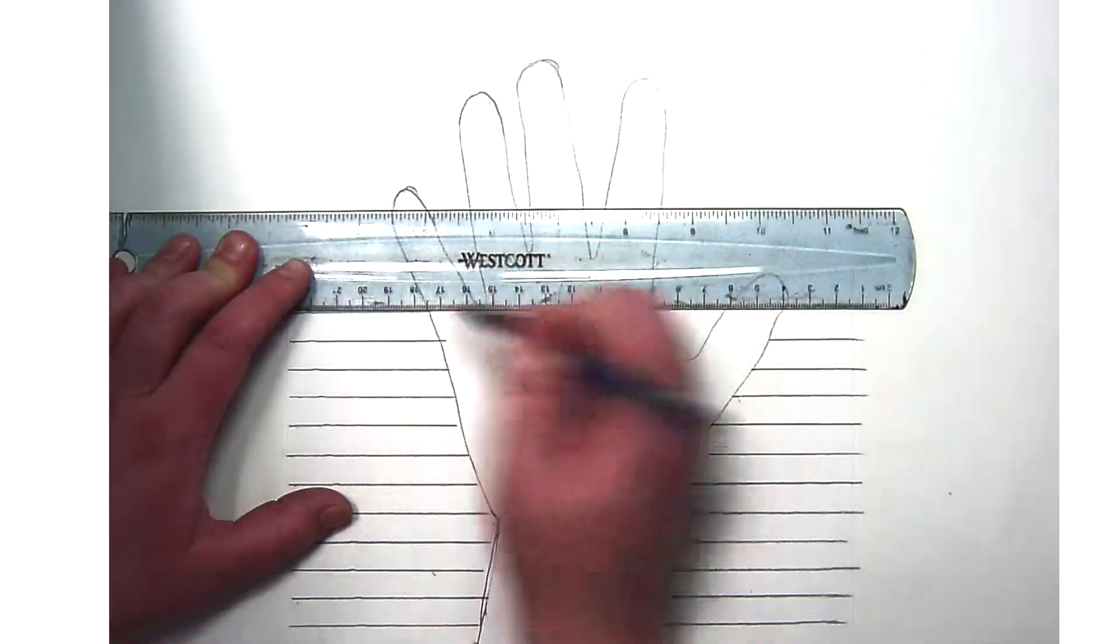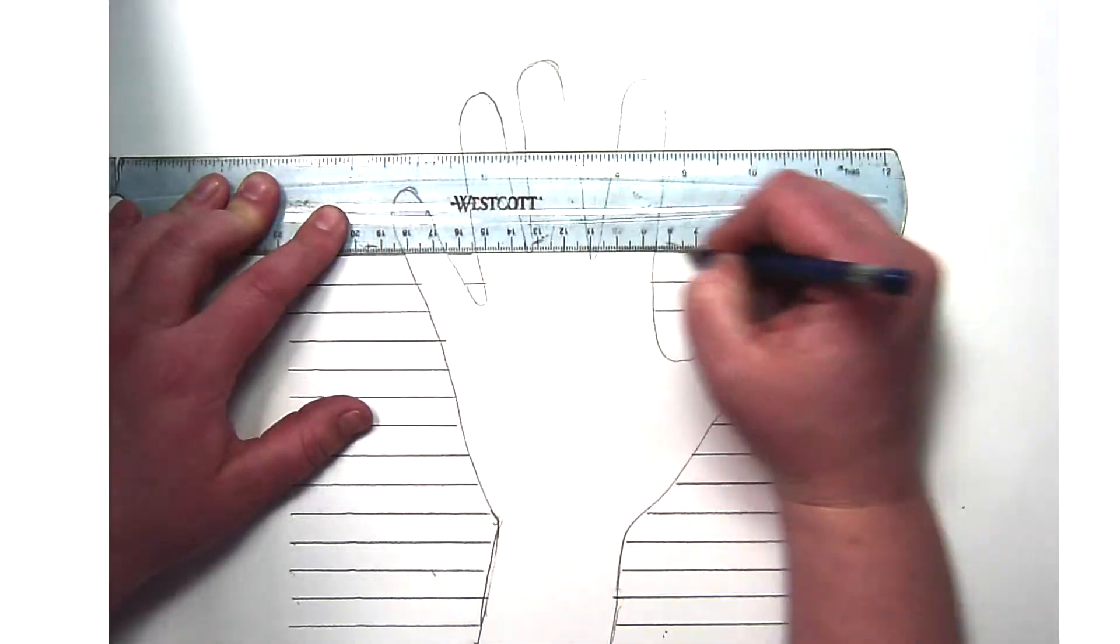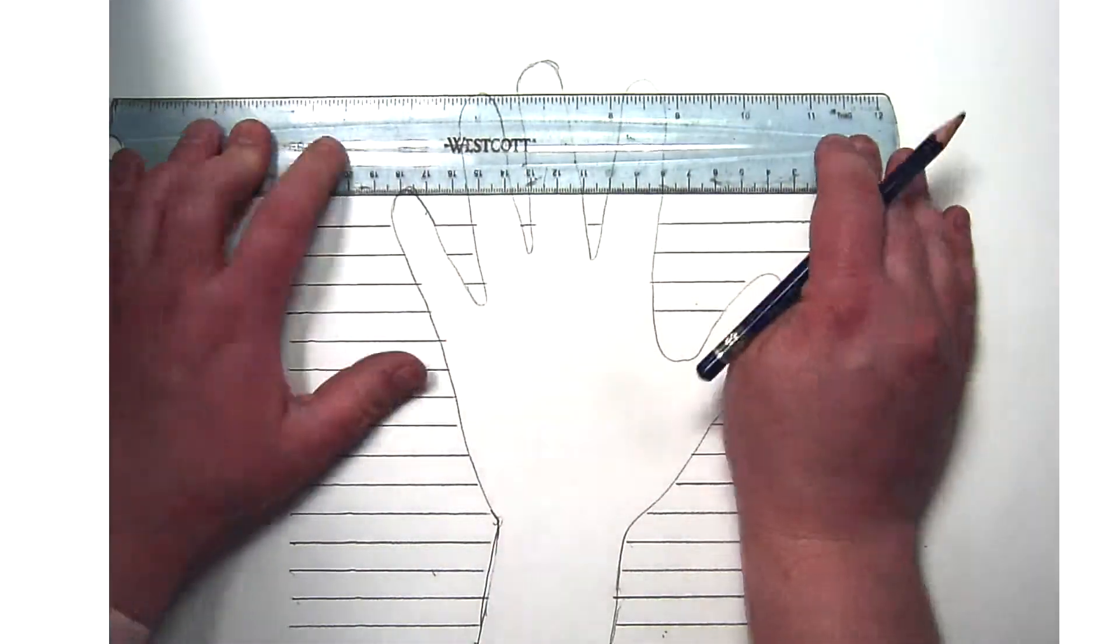So as I go across my paper, I'm skipping the fingers, but in between each finger and on the other side of the hand, I'm continuing these lines.